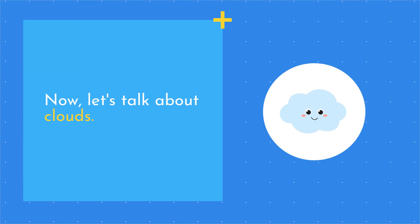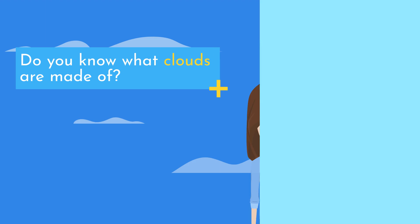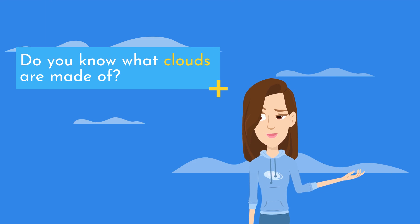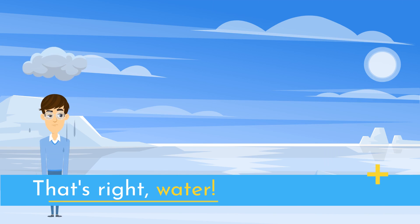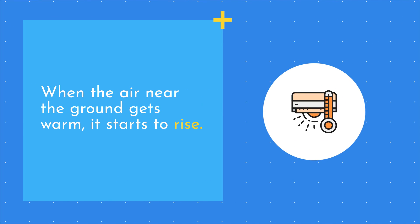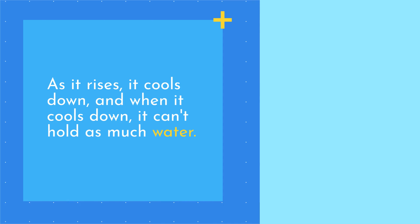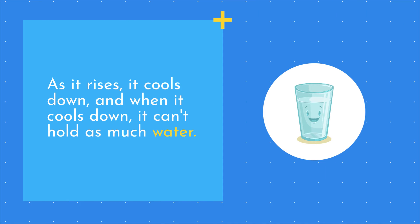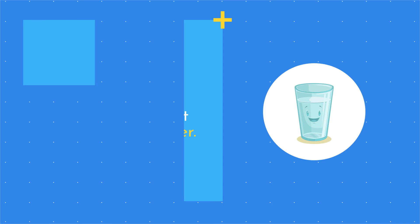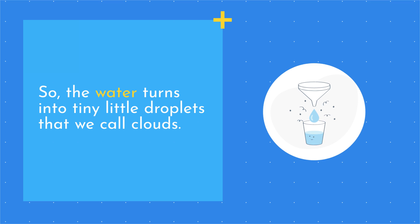Now, let's talk about clouds. Do you know what clouds are made of? That's right, water. When the air near the ground gets warm, it starts to rise. As it rises, it cools down, and when it cools down, it can't hold as much water. So the water turns into tiny little droplets that we call clouds.